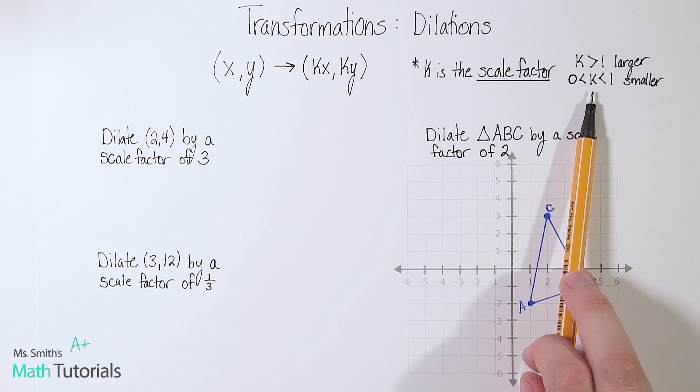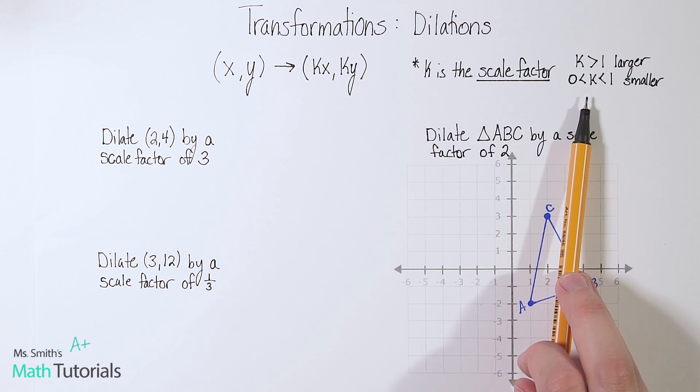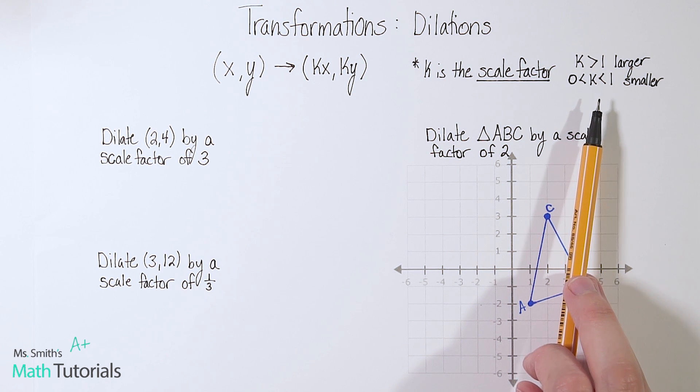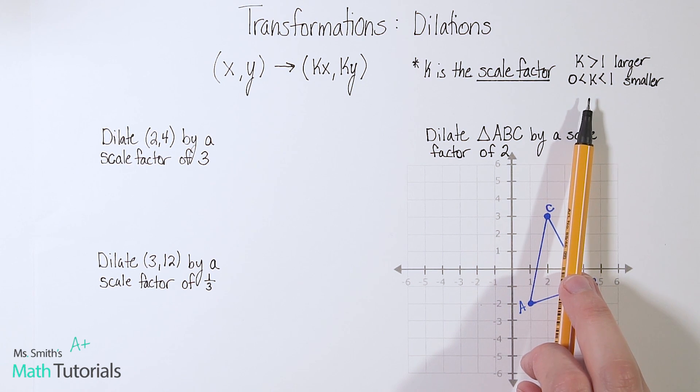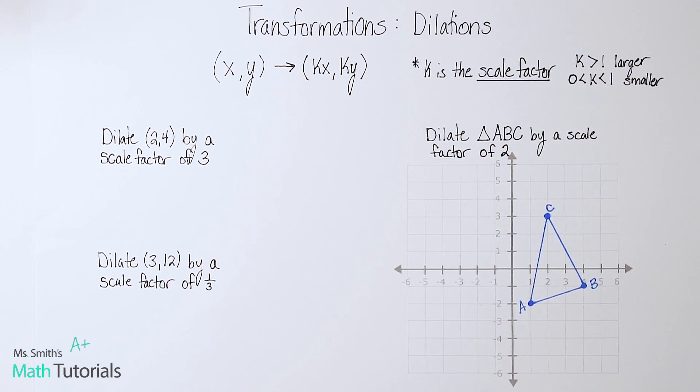But if k falls between zero and one, meaning it's a fraction or decimal less than one, for example, one half, one third, three fourths, 0.75. If it falls between zero and one, that means our shape or picture is going to get smaller.